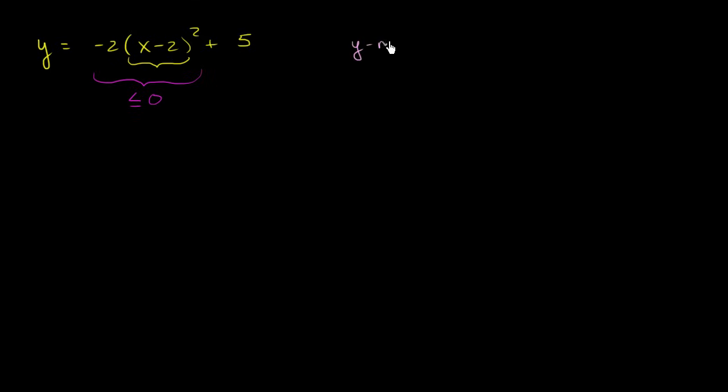So the maximum value for y is 5. And when does that happen? Well, y hits 5 when this whole thing is 0. And when does this thing equal 0? This whole thing equals 0 when x minus 2 is equal to 0, and x minus 2 is equal to 0 when x is equal to 2. So the point 2 comma 5 is the maximum point for this parabola.